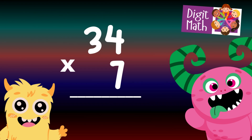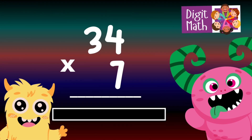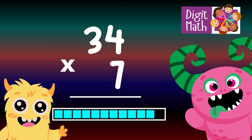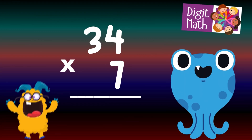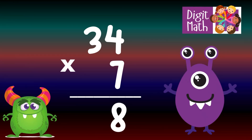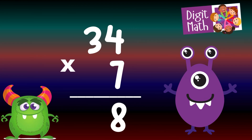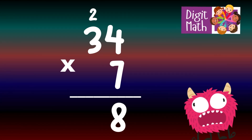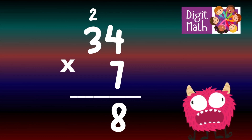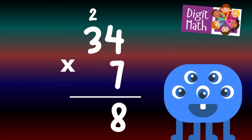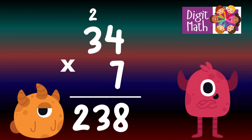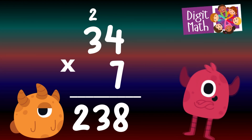34 times 7 — time to think. Let's go to the answer. To solve, multiply 34 by 7. In the Units column, multiply 7 by 4, which equals 28. Place 8 in the Units column and carry over 2 to the Tens column. In the Tens column, multiply 7 by 3, which equals 21. Add the carried over 2 to 21, making 23. Place 23 in the Tens and Hundreds column. So the final result is 34 times 7 equals 238.